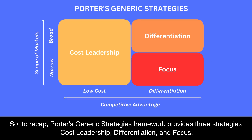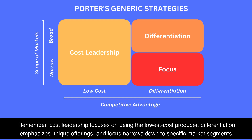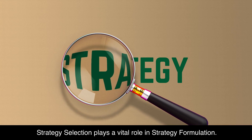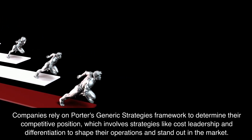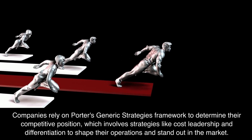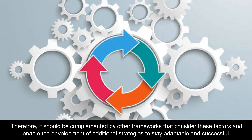To recap, Porter's generic strategies framework provides three strategies: cost leadership, differentiation, and focus. Companies can achieve a competitive advantage by pursuing one of these strategies based on their target market and scope. Cost leadership focuses on being the lowest cost producer, differentiation emphasizes unique offerings, and focus narrows down to specific market segments. Strategy selection plays a vital role in strategy formulation. However, it's crucial to remember that this framework doesn't account for the dynamic environment or potential opportunities and threats. Therefore, it should be complemented by other frameworks that consider these factors and enable the development of additional strategies to stay adaptable and successful.